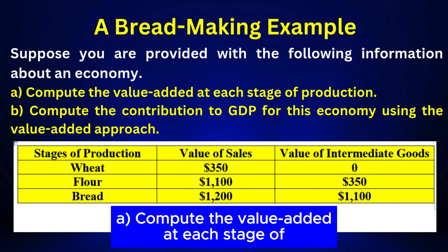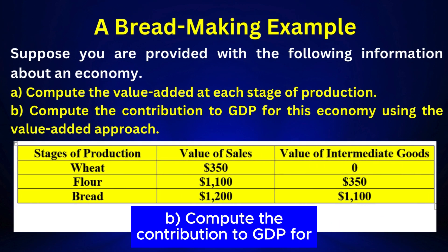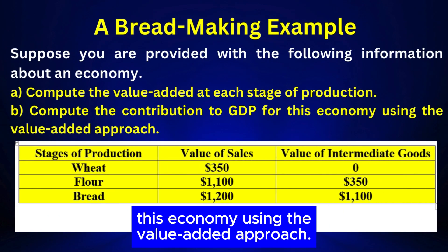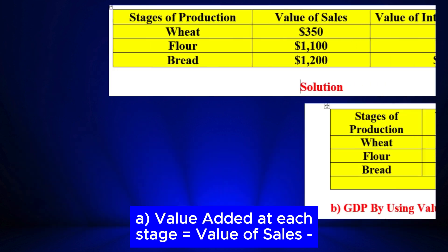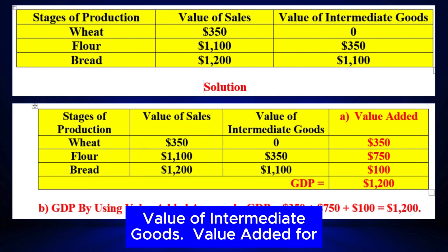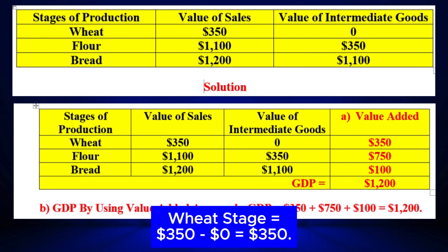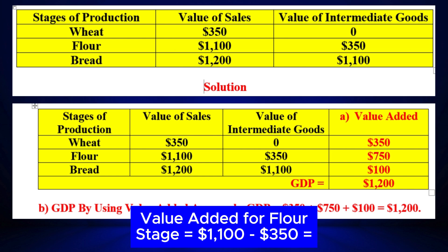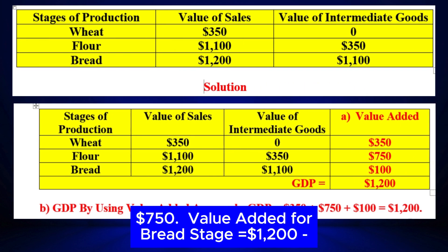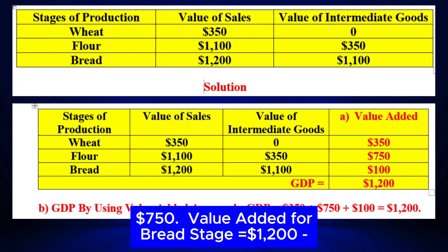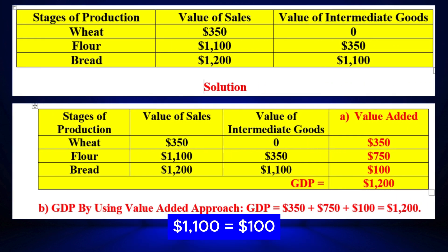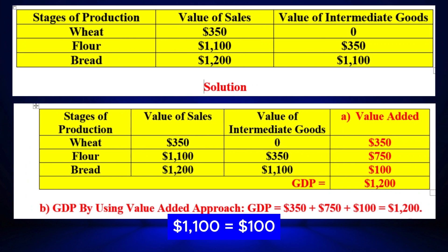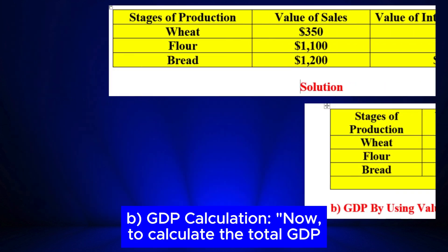Compute the value added at each stage of production, and compute the contribution to GDP using the value added approach. Value added at the wheat stage equals $350 minus $0 equals $350. Value added at the flour stage equals $1,100 minus $350 equals $750. Value added at the bread stage equals $1,200 minus $1,100 equals $100.